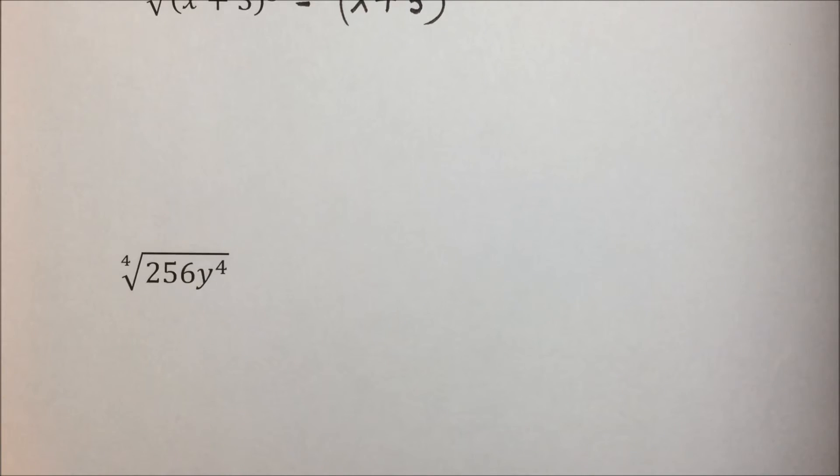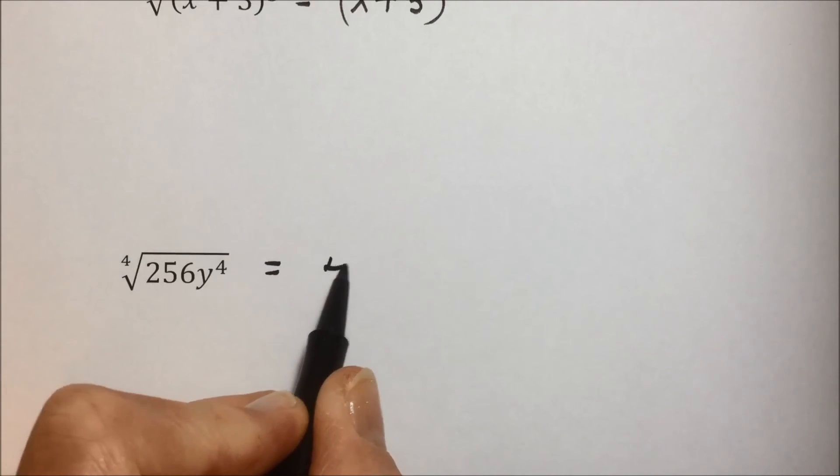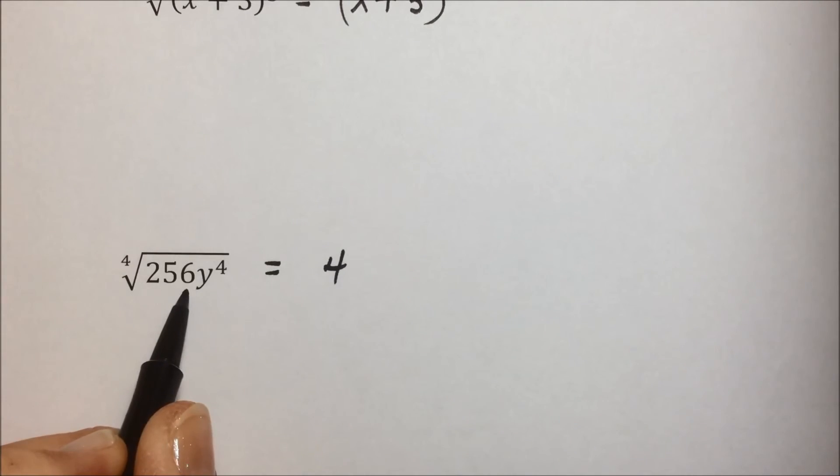What times what times what times what gives us 256? If you take that number and break it down, you end up finding that 4 times 4 times 4 times 4 is 256.